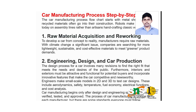In car manufacturing, there are five different kinds of components that everyone is familiar with: wheels, engine, chassis, the interior of the car, seating, along with the petrol tank. These are the major components that we can physically witness and understand their function, but we need to understand how the car has been manufactured.